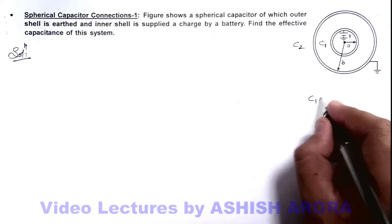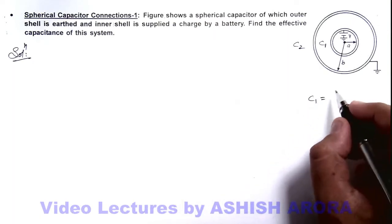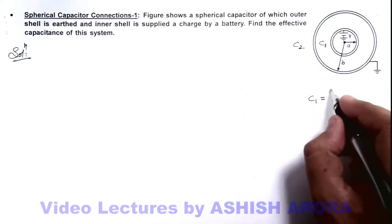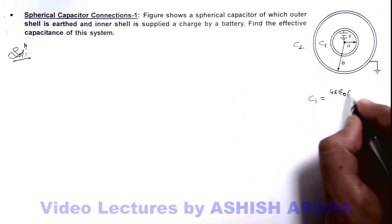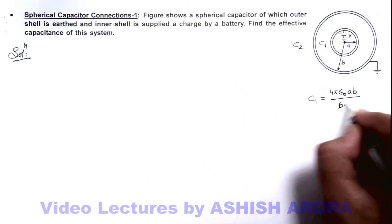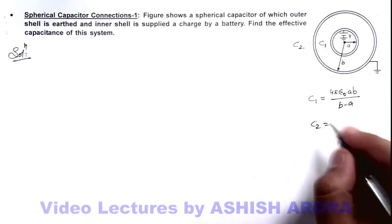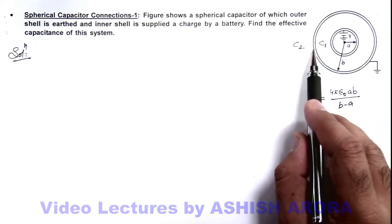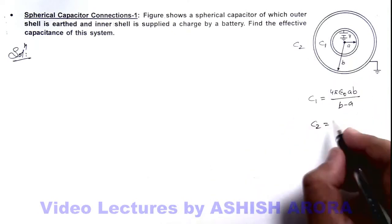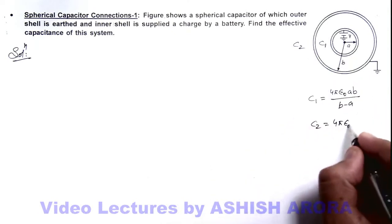Here we can write the values of C1 and C2 which we already calculated. C1 will be 4π epsilon not ay b upon b minus ay, the capacitance of a spherical capacitor. C2 is the capacitance of the shell b of radius b to infinity, so it is 4π epsilon not b.